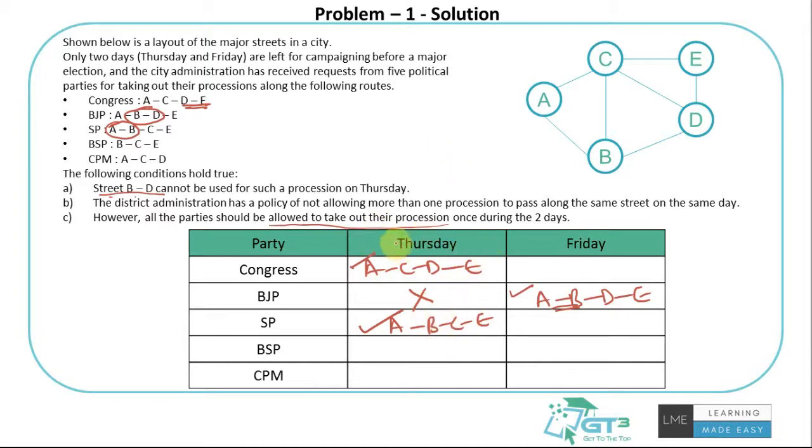As of now we've been able to fill half of it. So I'm only left with BSP and CPM to complete the journey. What about CPM? AC is something they need and it's already done by Congress. So they cannot do it on Thursday because AC is already filled by Congress on Thursday. So CPM has to do it on Friday. Streets AC and CE are not taken by BJP on Friday.